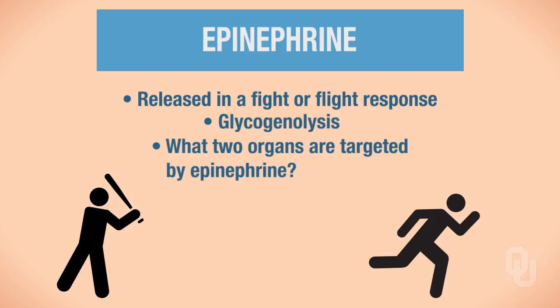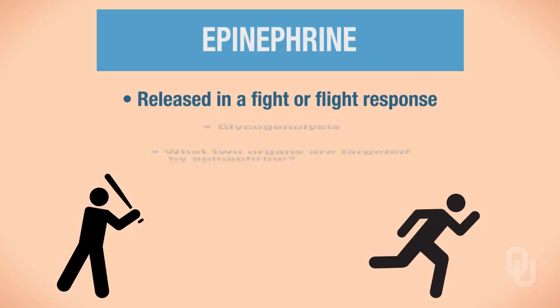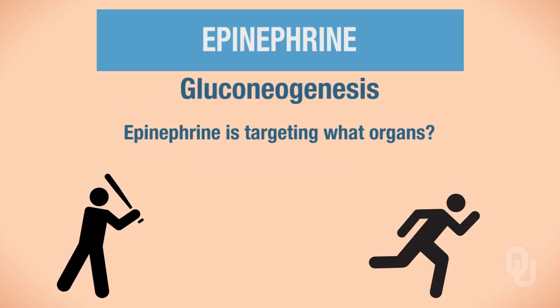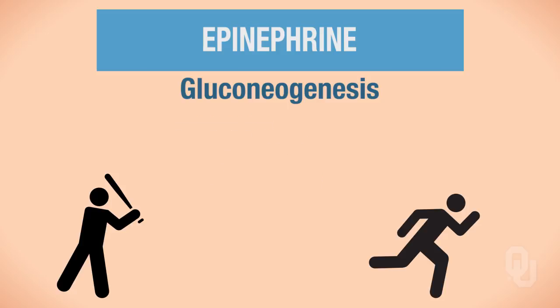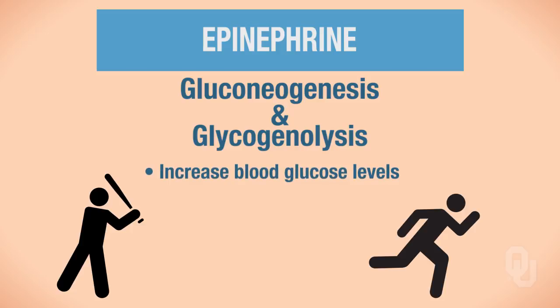Glycogenolysis means breaking down glycogen into glucose, and the two organs that store glycogen are the liver and skeletal muscle. When gluconeogenesis occurs, epinephrine targets the liver, where glucose is produced from non-carbohydrate sources such as glycerol and amino acids. Both gluconeogenesis and glycogenolysis increase blood glucose levels so you can use that glucose for energy when running from a threat.